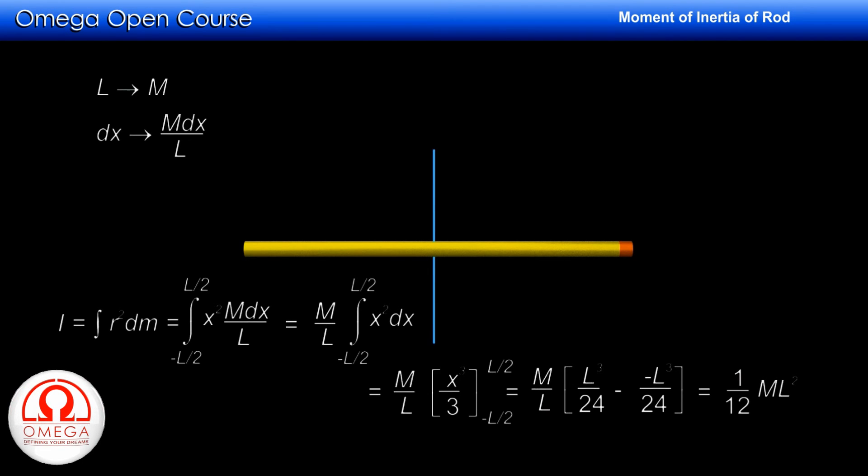Thus, the moment of inertia of a rod of mass m and length l about an axis perpendicular to it and passing through its center of mass is 1 by 12 ml square.